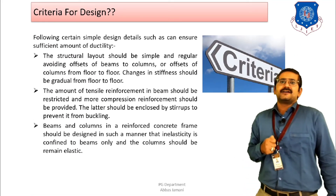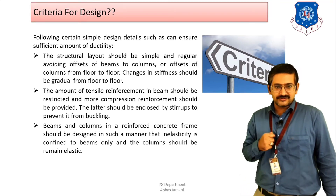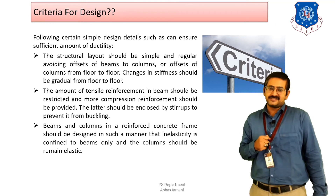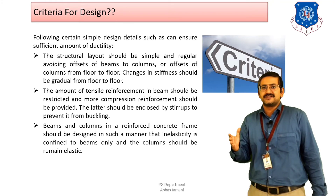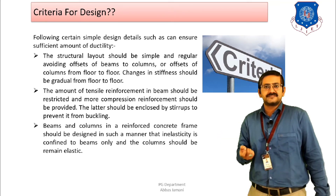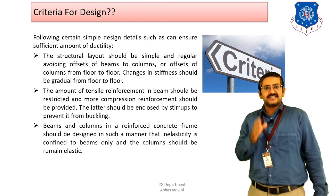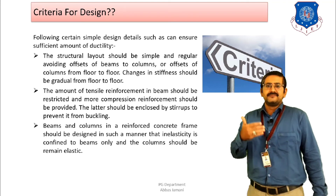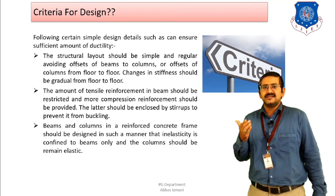Next is the criteria for design. The structural layout should be simple and regular in plan — irregular shapes should be avoided. As discussed in earlier lectures, excessive plan length or sudden changes in stiffness create problems. The offset in columns floor-to-floor and beam-to-column offset should be minimum, and any change in stiffness should be gradual.